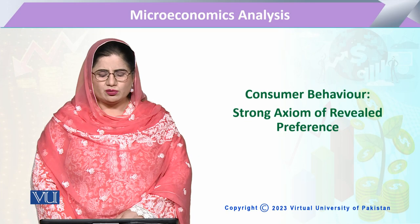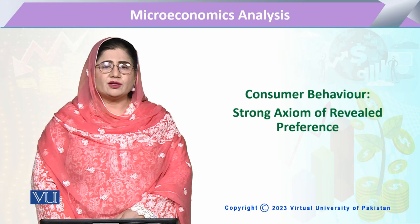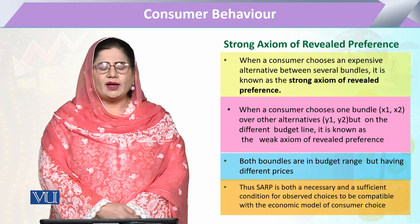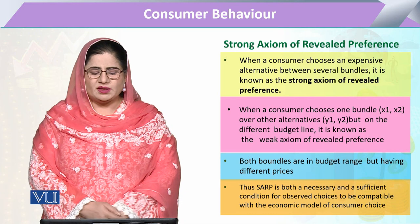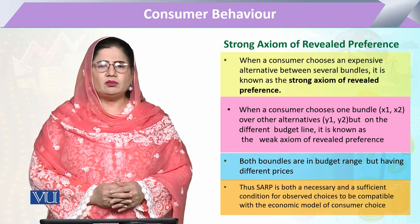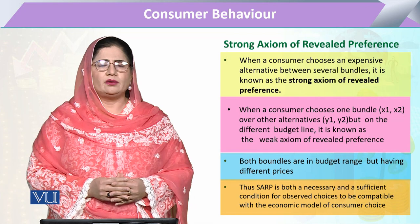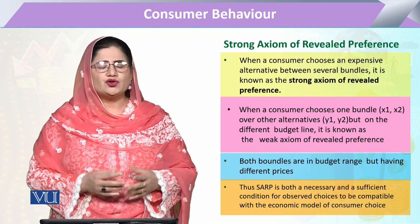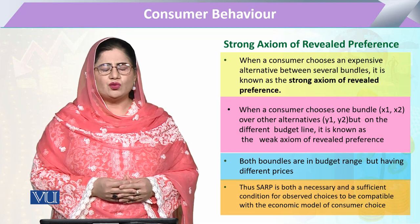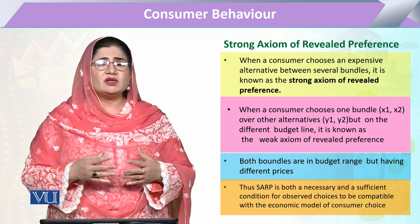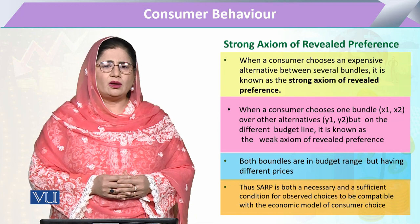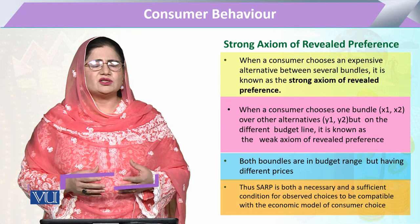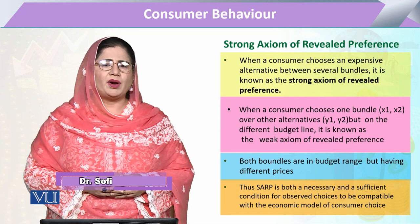In this module we are going to study the strong axioms of revealed preference. The strong axioms of revealed preference basically explain what this concept is. It is that principle which expresses revealed preference in a very strong form, and it must be expressed. That is why we call it 'strong' — because it actually gives the strength of revealed preference.